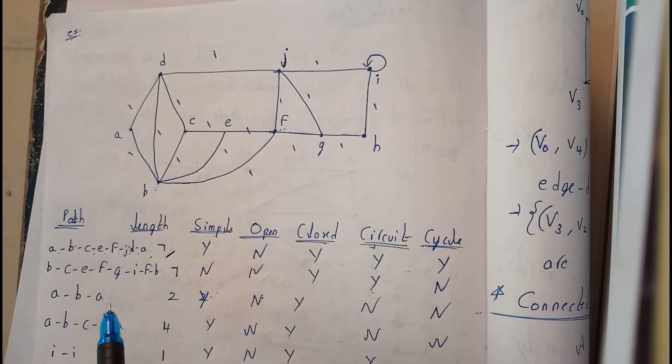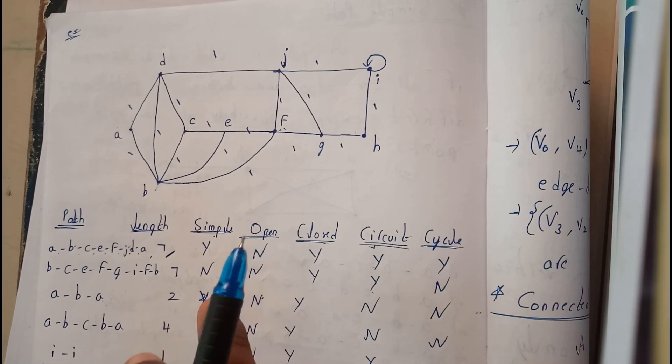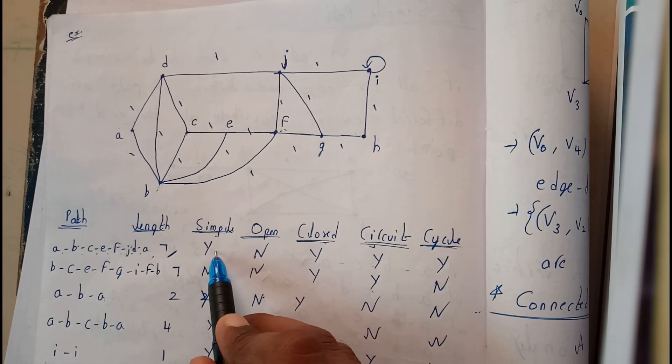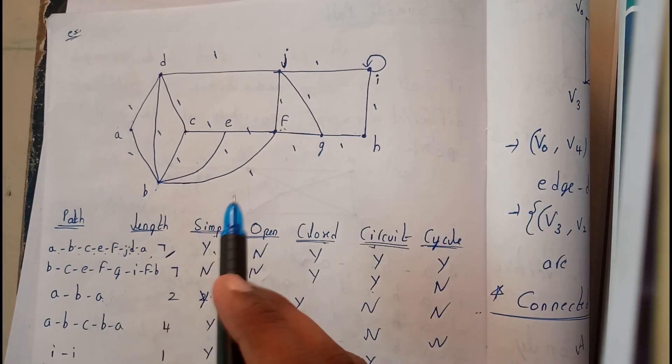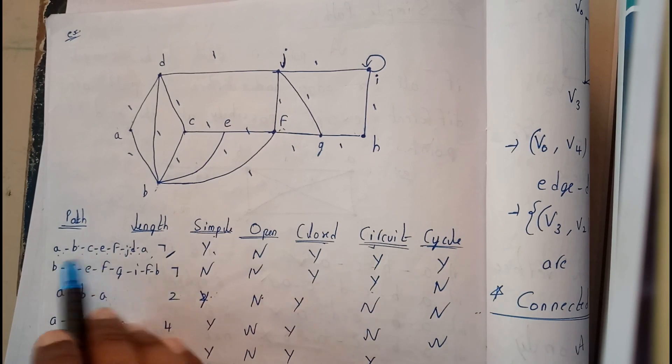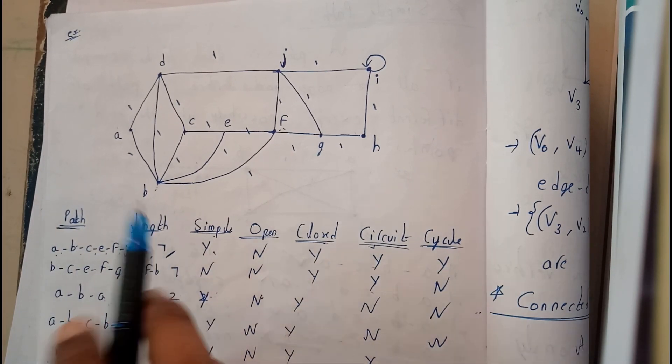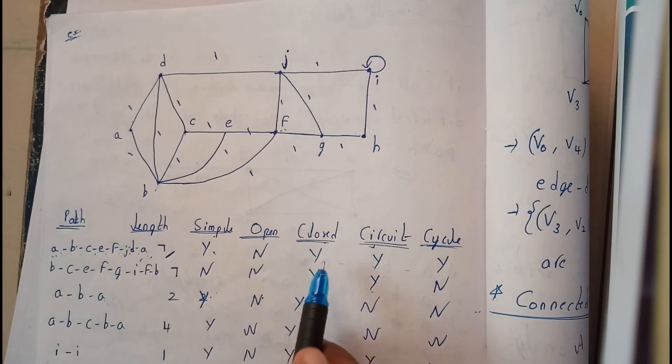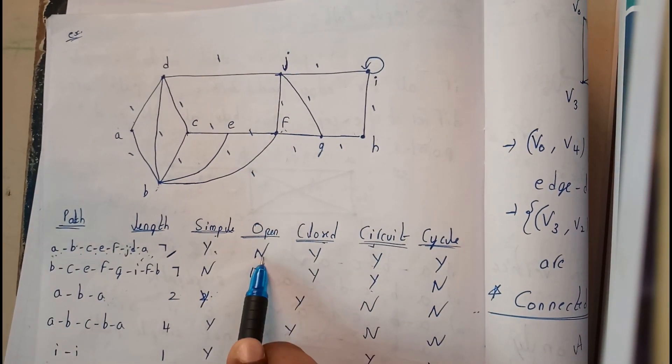Are there any parallel edges or some kind of self loops? There are no parallel edges and no self loops, so this is a simple graph. Is it an open graph? An open graph has initial and final vertices that should be different, whereas here they are same. So this is closed, not open.